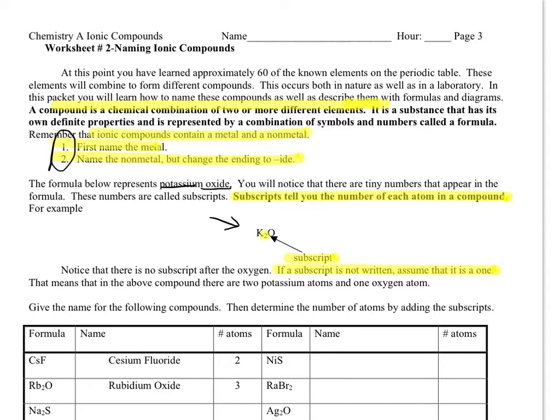But when potassium and oxygen combine, actually two potassiums combine with just one oxygen. You notice that there's no number on the oxygen. Well, when there's no number we assume that it's a one. It's just a time-saving thing—if there's a one you don't have to write it. So if a subscript is not written, assume that it's one.